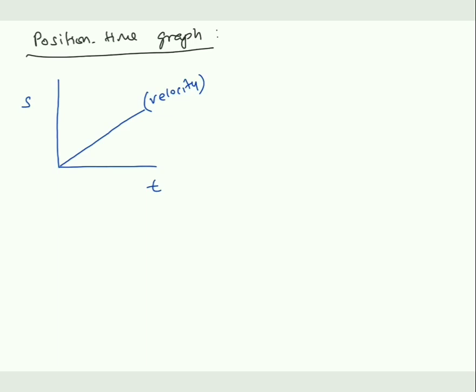The first thing you should know: slope of any graph gives y by x. What is there in y and what is there in x? Here, on the y-axis position or displacement is there, and on the x-axis you have time. We know displacement by time gives velocity, so slope of position time graph gives velocity.